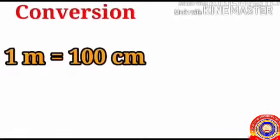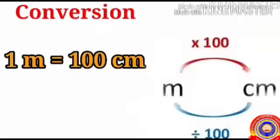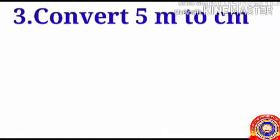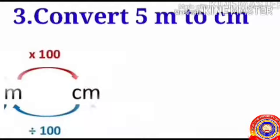Next, we will look at the conversion of meter to centimeter. One meter equals one hundred centimeters. So to convert meter to centimeter, multiply by one hundred, and centimeter to meter, divide by one hundred.